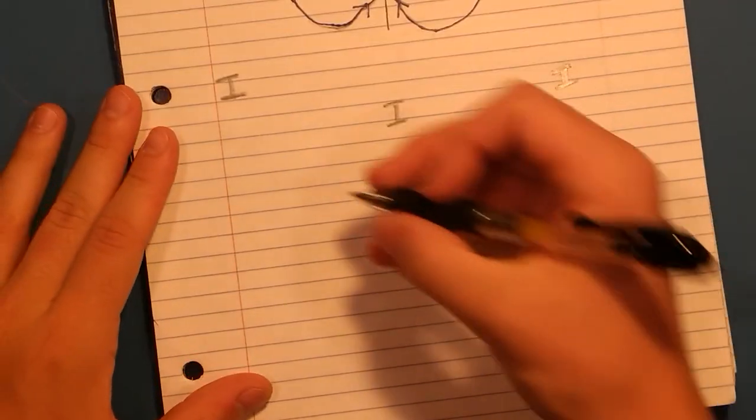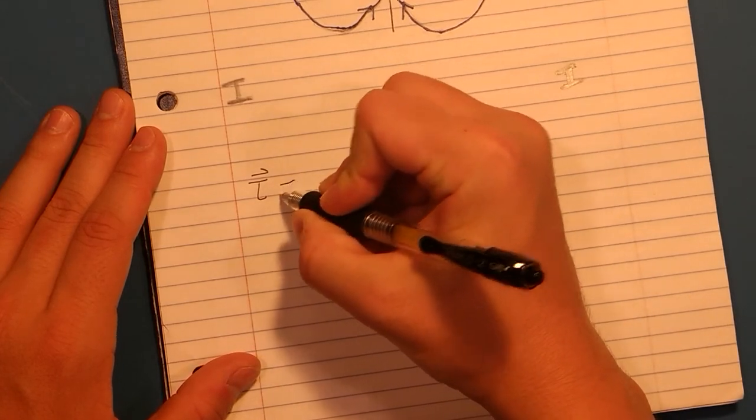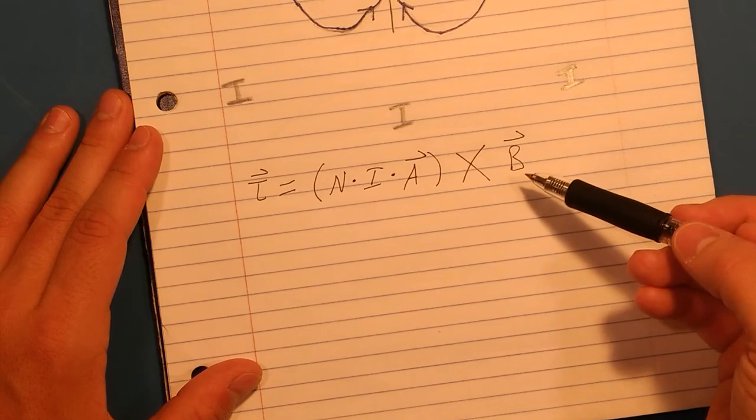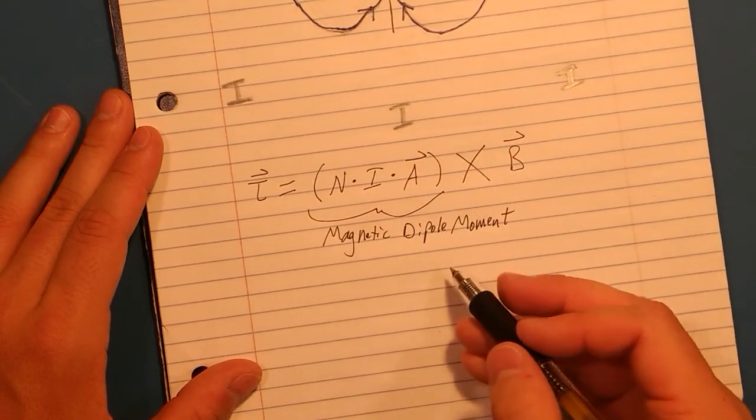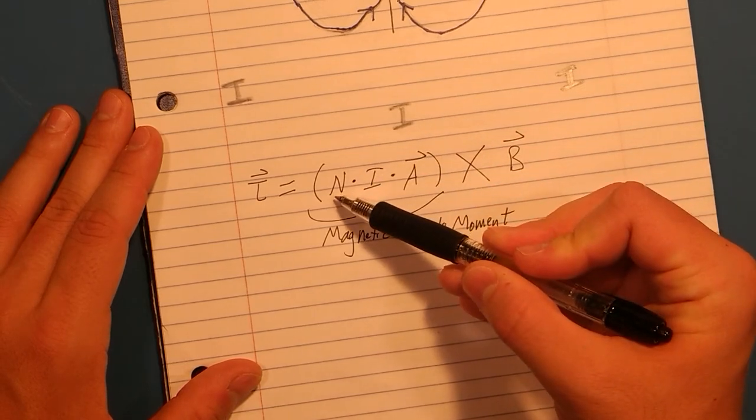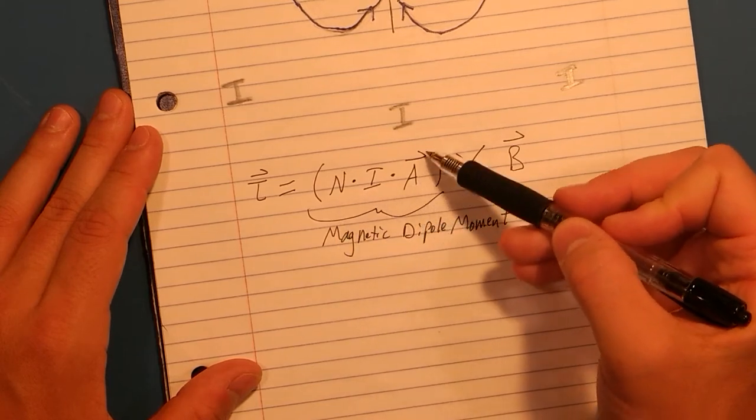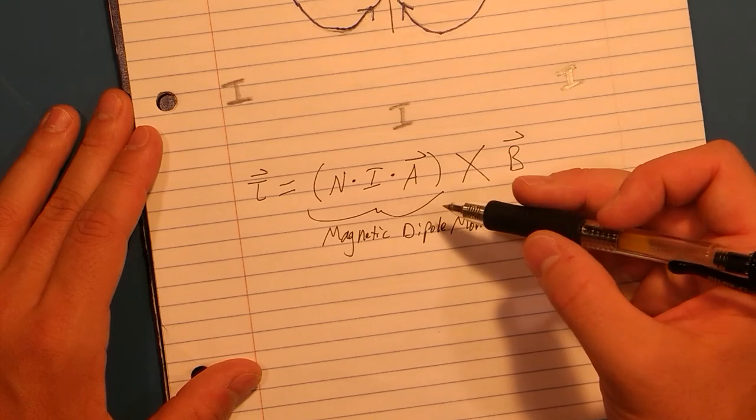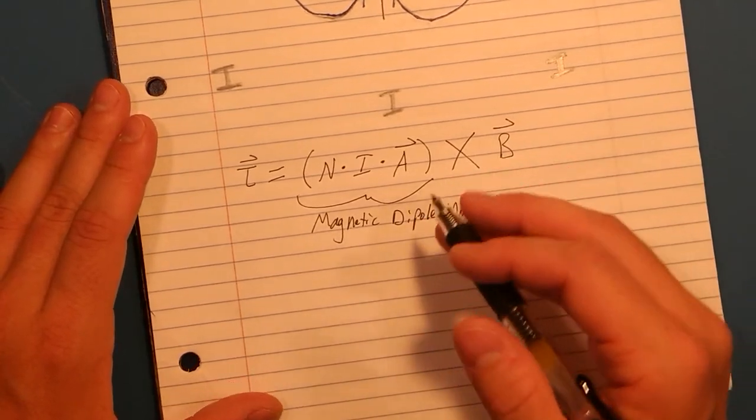However, the problem with a magnetorquer is that you don't have easy three-axis control over the CubeSat. Getting into a little bit of maths, we see that the torque affecting the CubeSat is equal to the cross product of the magnetic field of the Earth with this product here, which is the magnetic dipole moment. So that's the number of turns of wire around a core, the amount of amps going through the wire, and then A, which stands for the area of the loop of wire.